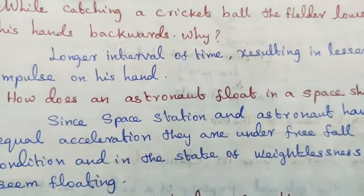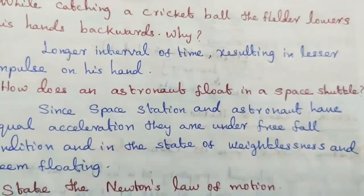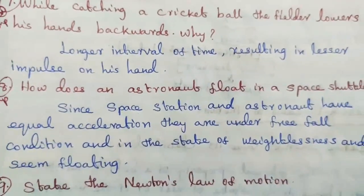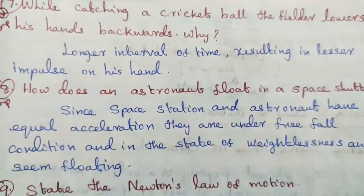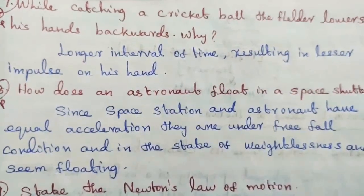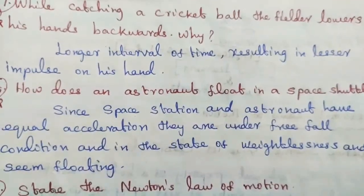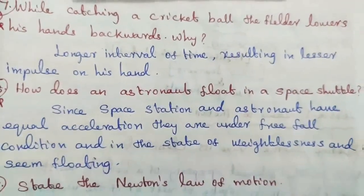Question number eight, important question: how does an astronaut float in a space shuttle? Since the space station and astronaut have equal acceleration, they are under free fall condition and in the state of weightlessness, and seem to be floating.